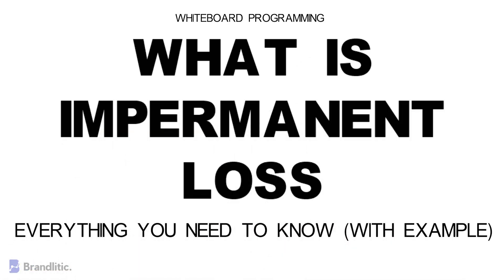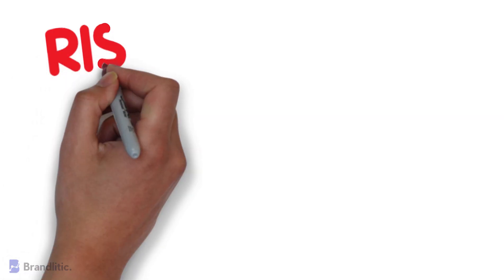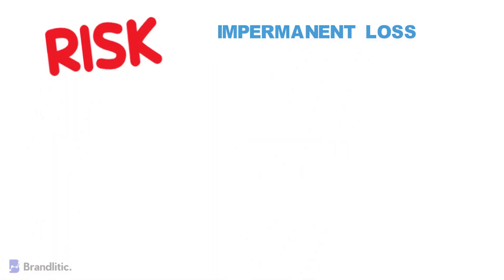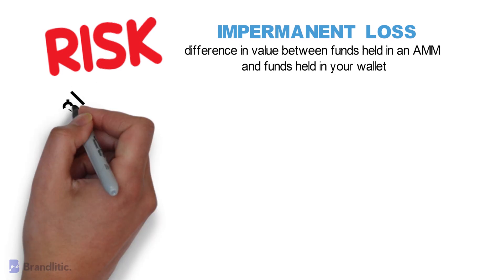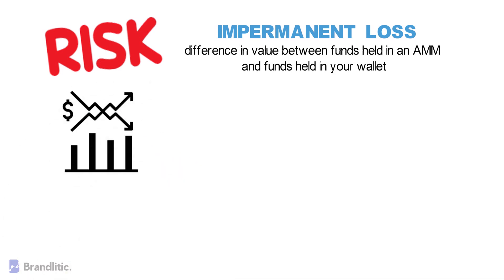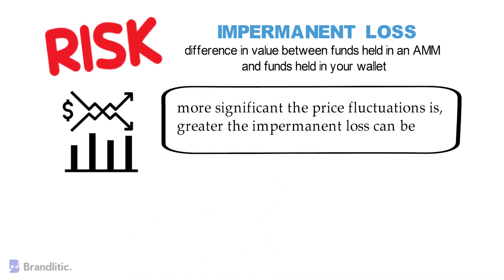Impermanent losses are one of the risks concerned with liquidity pools in DeFi. To state its definition, it refers to the difference in value between funds held in AMM and the funds held in your wallet. Impermanent loss occurs when the value of funds staked to the AMM fluctuates drastically. The more significant the price fluctuation is, the greater impermanent loss can be.